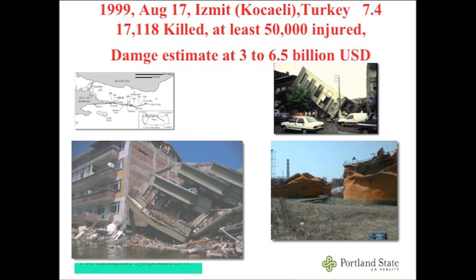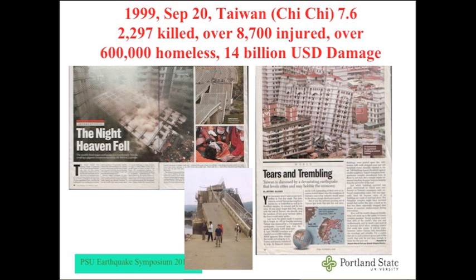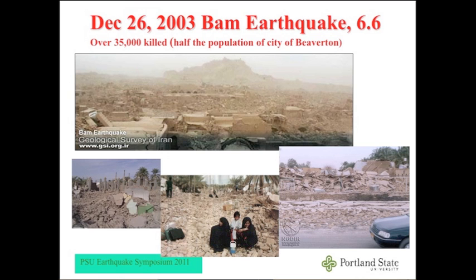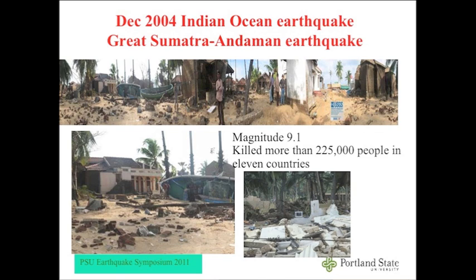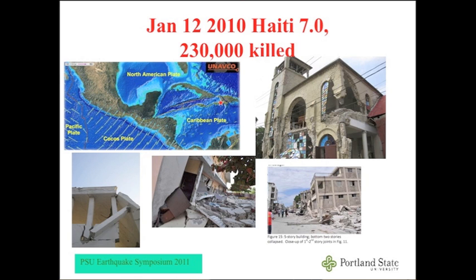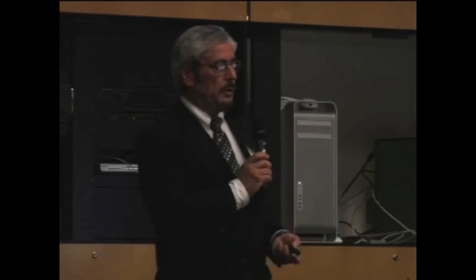The Izmit earthquake was magnitude 7.4 — one that attracted a lot of attention, with over 17,000 people killed. The Taiwan earthquake had about 2,500 deaths and billions of dollars in losses. The BAM earthquake killed 35,000 people. The 2004 Indian Ocean earthquake killed over 225,000 people. The Haiti earthquake killed 230,000 people. All are samples of quakes we have learned from. The Chile earthquake of 2010 is another important example.